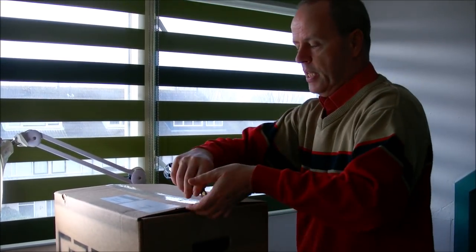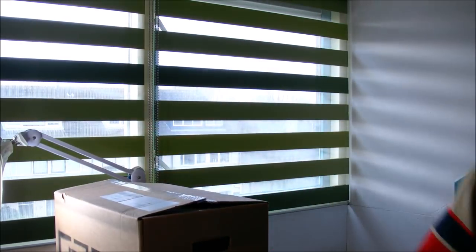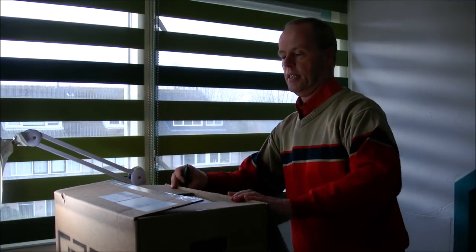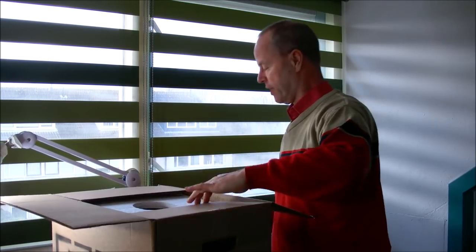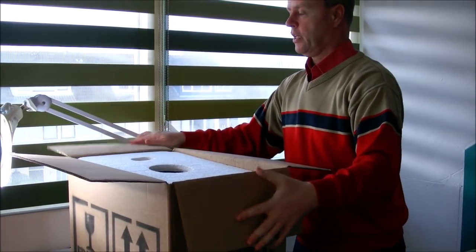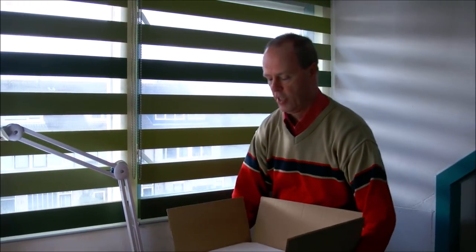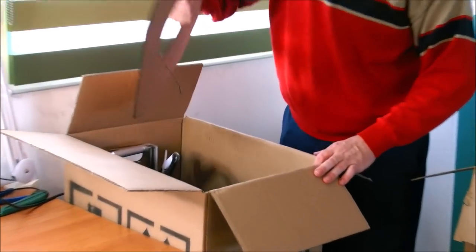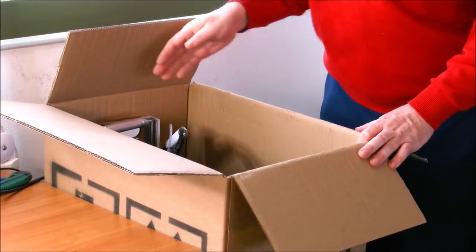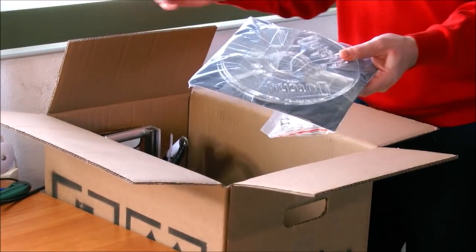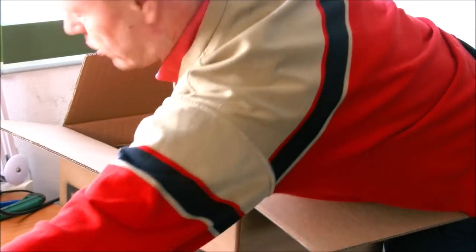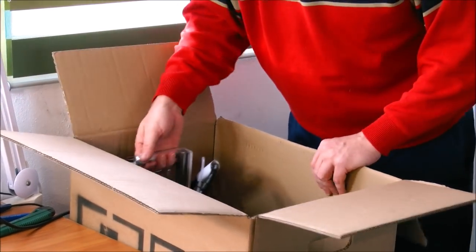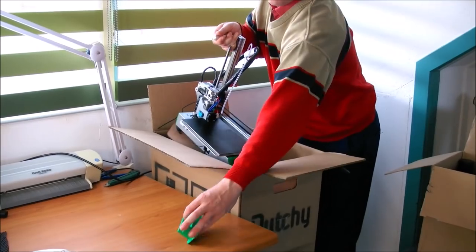So here we have the box, and it's a bit hard to see what's inside. Some plastic, and here we have some materials for making more spools. A map, and there we have the printer.